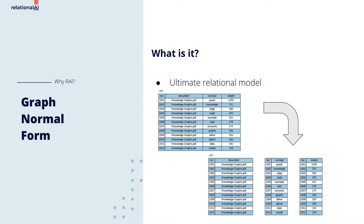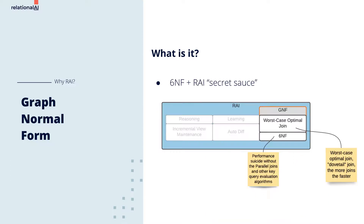Graph normal form is RAI's implementation of 6-normal form, or 6NF, the ultimate expression of the relational model. In 6-normal form, each relation has one or more key columns and just one value column. There are no nulls, no empty rows. GNF extends 6-normal form data modeling by adding concepts and meaning to the links that connect the individual 6-normal form relations.